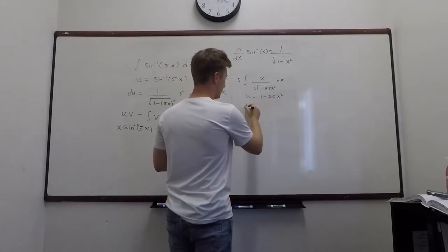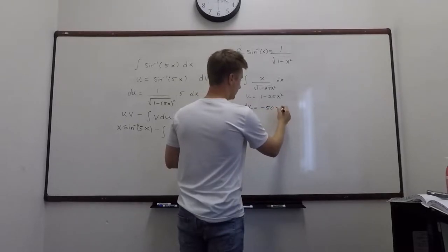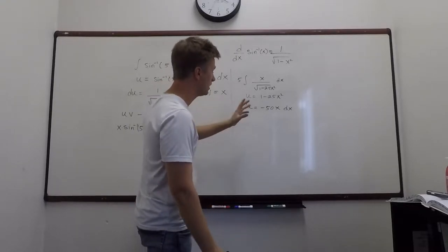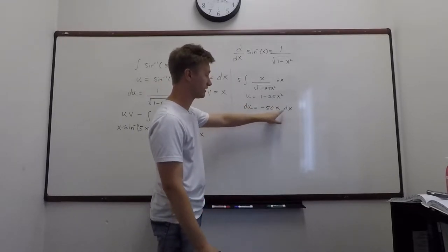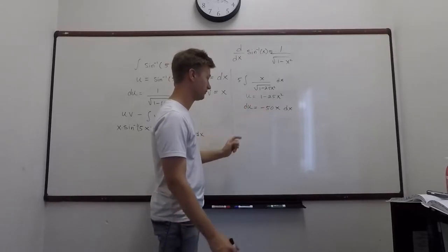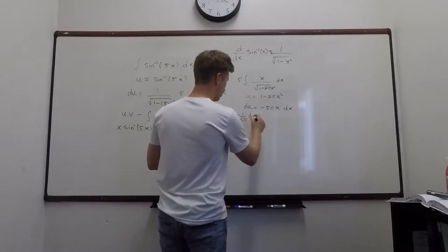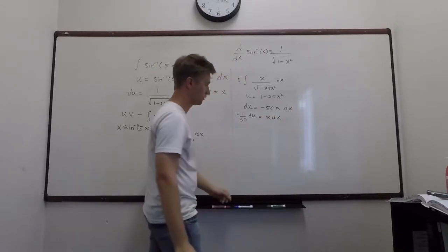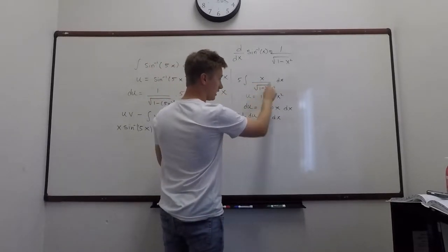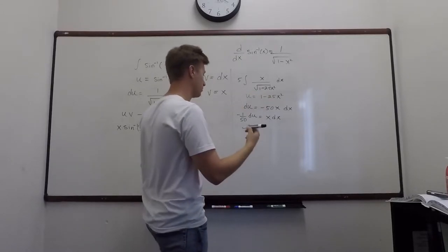So u is equal to this. du is equal to negative 50x dx. So the derivative of that is just negative 50x. And this is nice because I do have x dx in my integral. So we have to move this 50 over, or the negative 50, so negative 1 over 50 du will become x dx. Okay, so this is nice because I have x dx in my integral. x dx. Okay, and then I can replace the bottom with u. Okay, so what does this become?